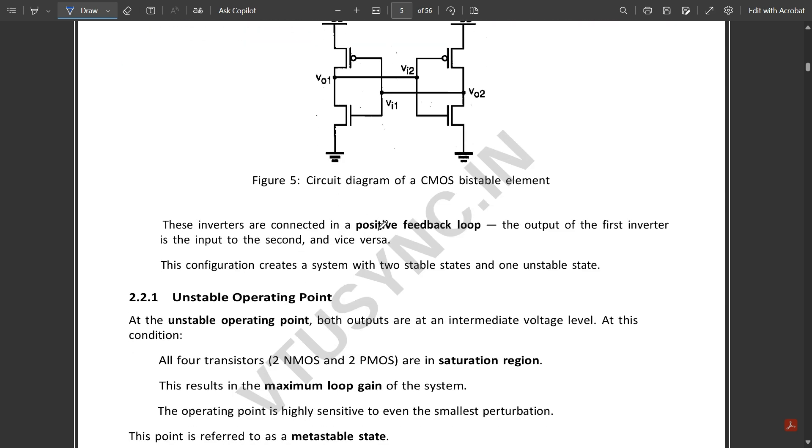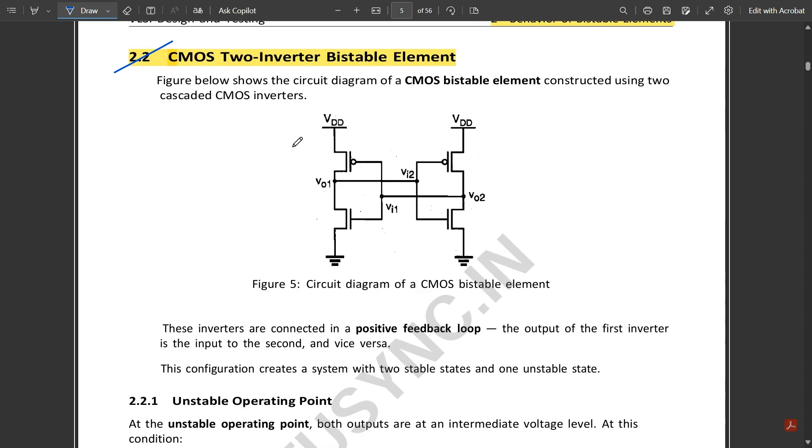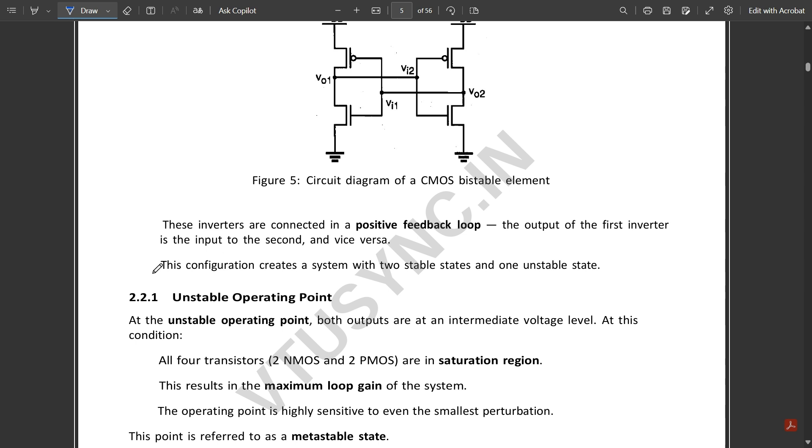These inverters are connected in a positive feedback loop. The output of the first inverter is the input to the second and vice versa. This configuration creates a system with two stable states and one unstable state.